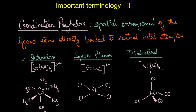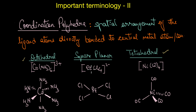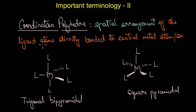Both [PtCl₄]²⁻ and [Ni(CO)₄] have coordination number four, but their geometries differ. Platinum in [PtCl₄]²⁻ acquires a square planar structure, while nickel in [Ni(CO)₄] is tetrahedral. The reason for this difference will be addressed when we discuss bonding in coordination compounds. We also have other coordination polyhedra such as trigonal bipyramidal and square pyramidal.